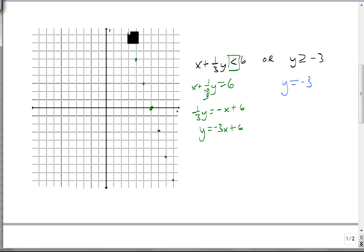This is a dashed line because it's strictly less than. Since 0 plus 0 is less than 6 is true, we shade towards the origin. So there's our first one, and it would shade this whole region right here.